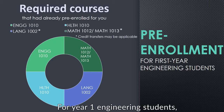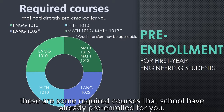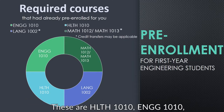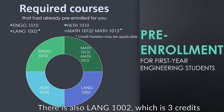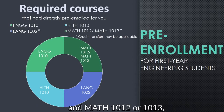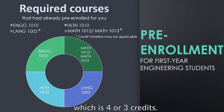For year one engineering students, there are some required courses that the school has already pre-enrolled for you. These are Health 1010, ENGD 1010, and both are zero credit bearing. There's also Lang 1002, which is three credits, and Math 1012 or 1013, which is four or three credits.